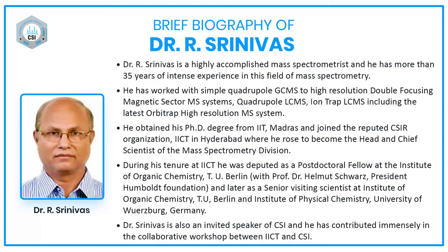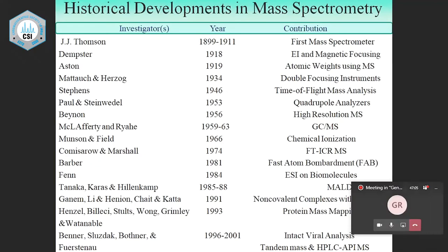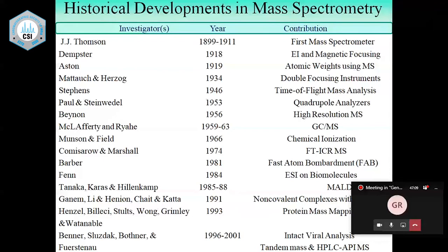Good morning. Today I'm going to talk on EI and CI mass spectrometry and will try to cover the interpretation of mass spectra. Before talking on mass spectrometry and interpretation aspects, I would like to give a brief introduction to historical developments in mass spectrometry to remember the great scientists who contributed immensely to the field. Mass spectrometry is a powerful analytical technique for determination of molecular weight of small to large molecules and also structural elucidation.